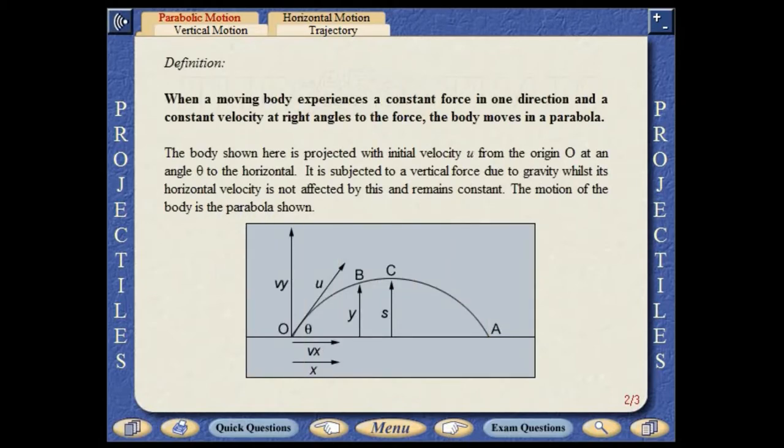When a moving body experiences a constant force in one direction and a constant velocity at right angles to the force, it moves in a parabola. The body shown here is projected from the origin with initial velocity U at an angle theta to the horizontal. It is subjected to a vertical force due to gravity, but its horizontal velocity is not affected by this and remains constant.